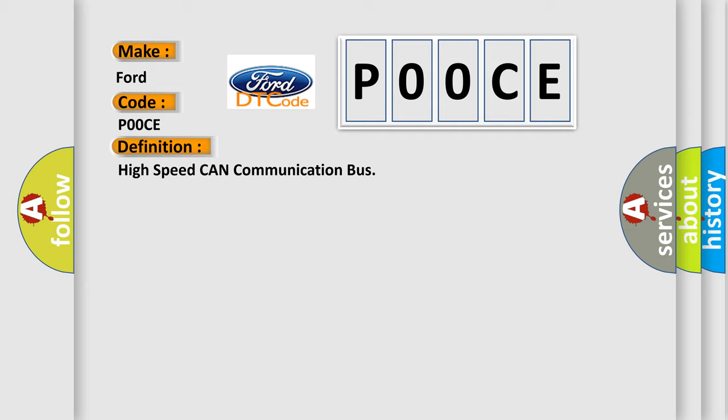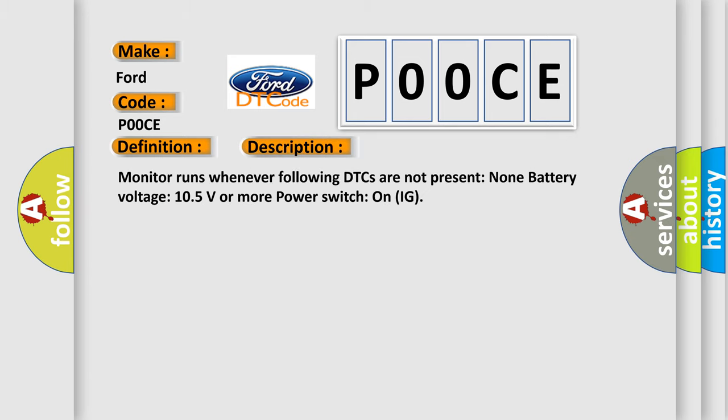And now this is a short description of this DTC code. Monitor runs whenever following DTCs are not present: none. Battery voltage 10.5 volts or more, power switch on IG.